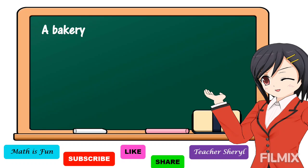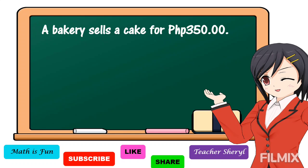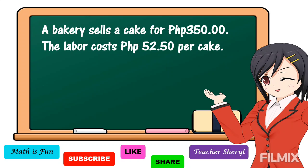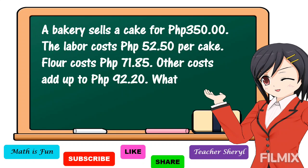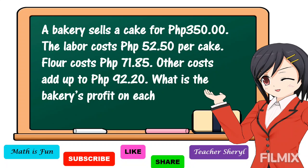Next problem. A bakery sells a cake for 350 pesos. The labor costs 52 pesos and 50 centavos for a cake. Flour costs 71 pesos and 85 centavos. Other costs add up to 92 pesos and 20 centavos. What is the bakery's profit on each cake?